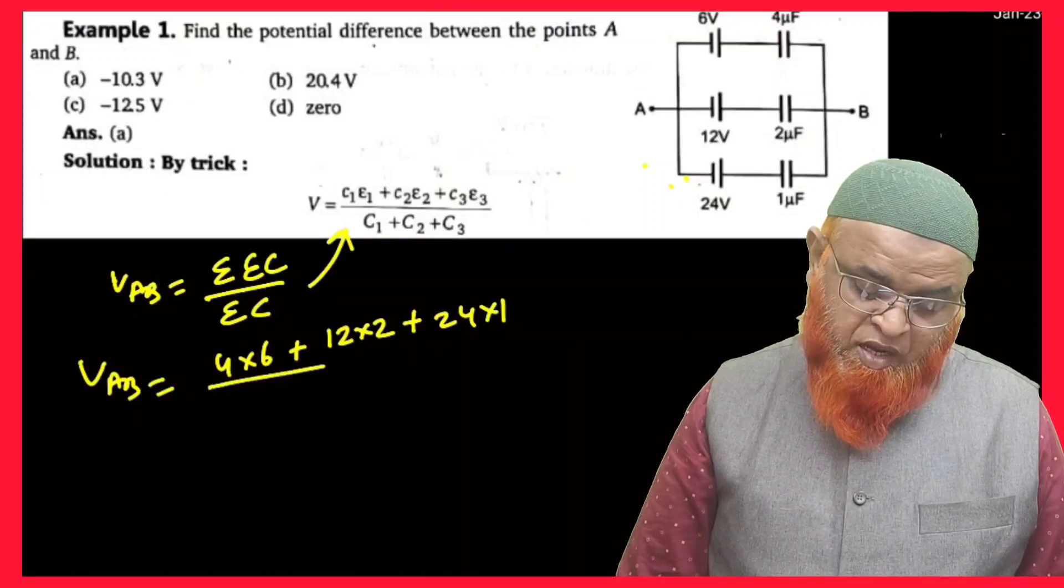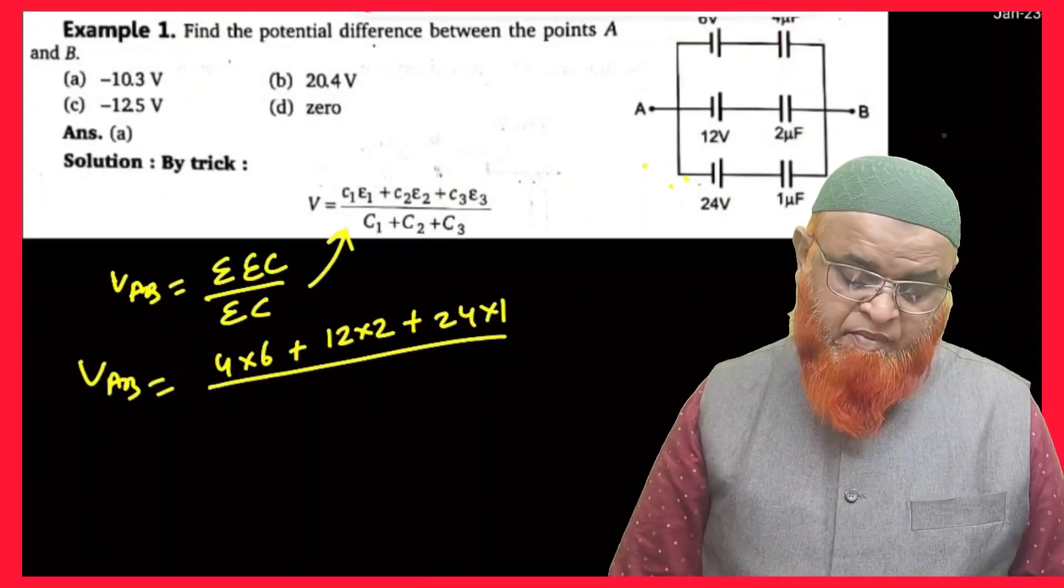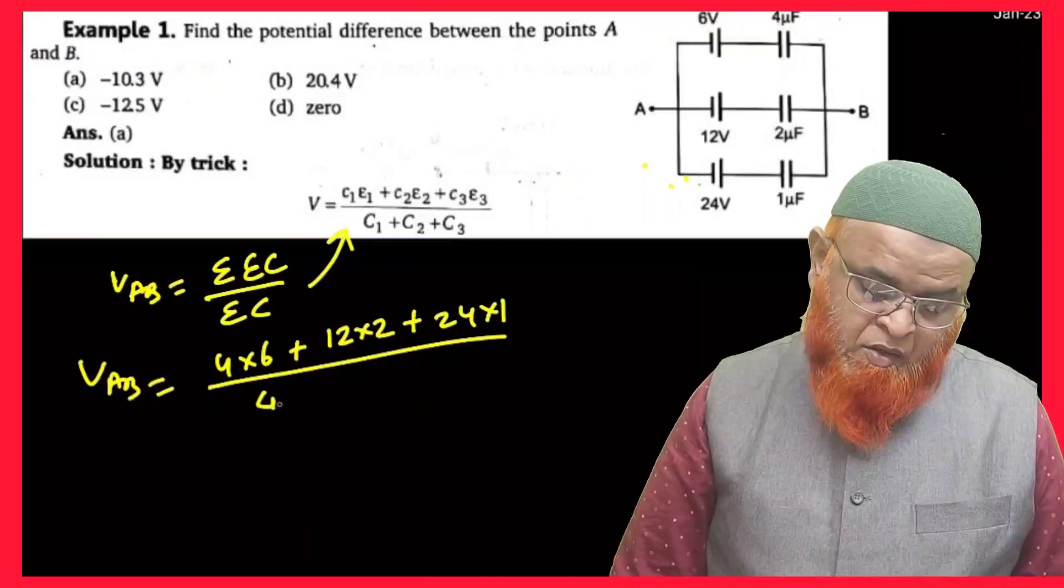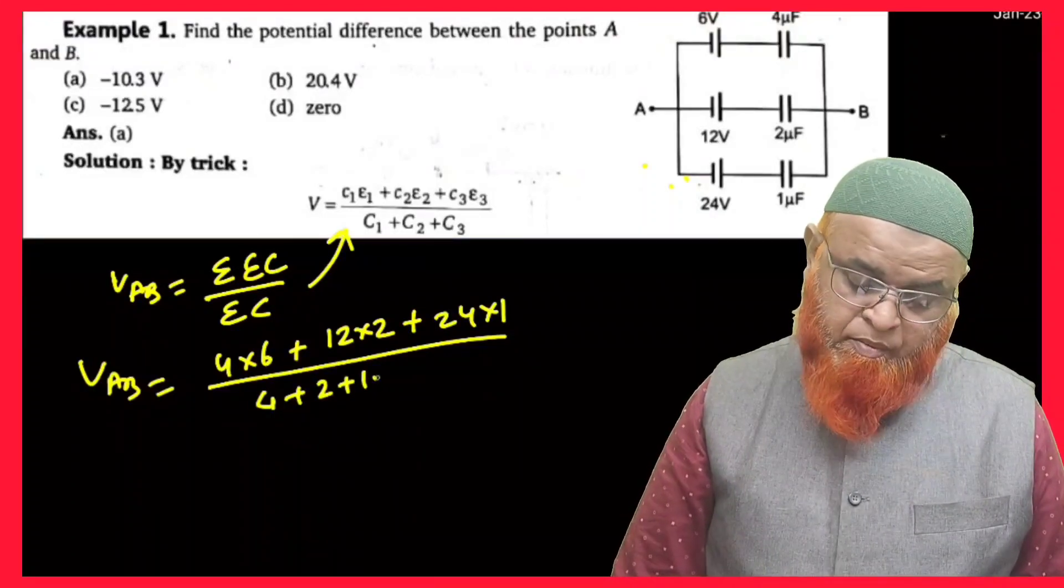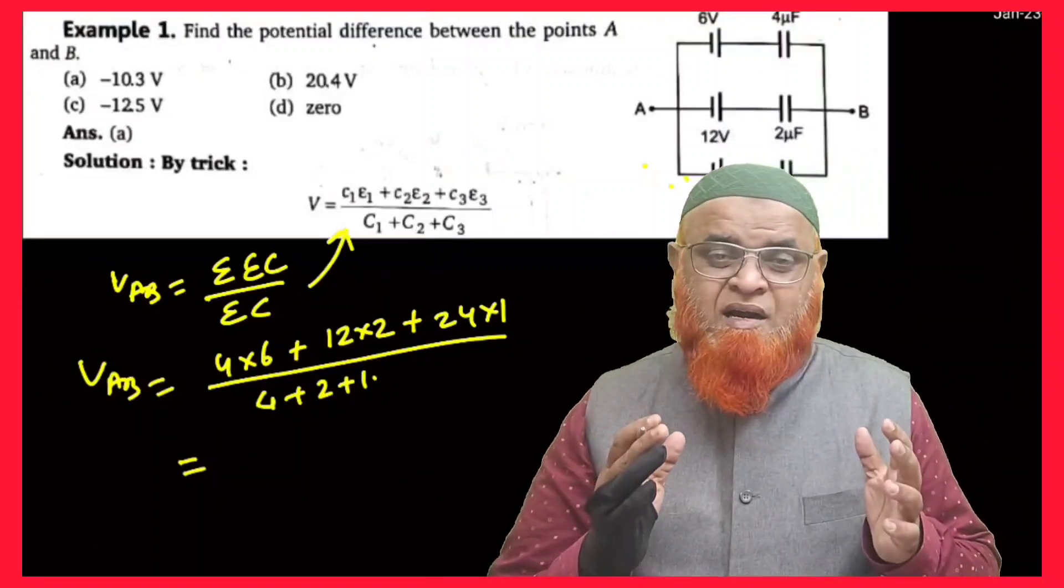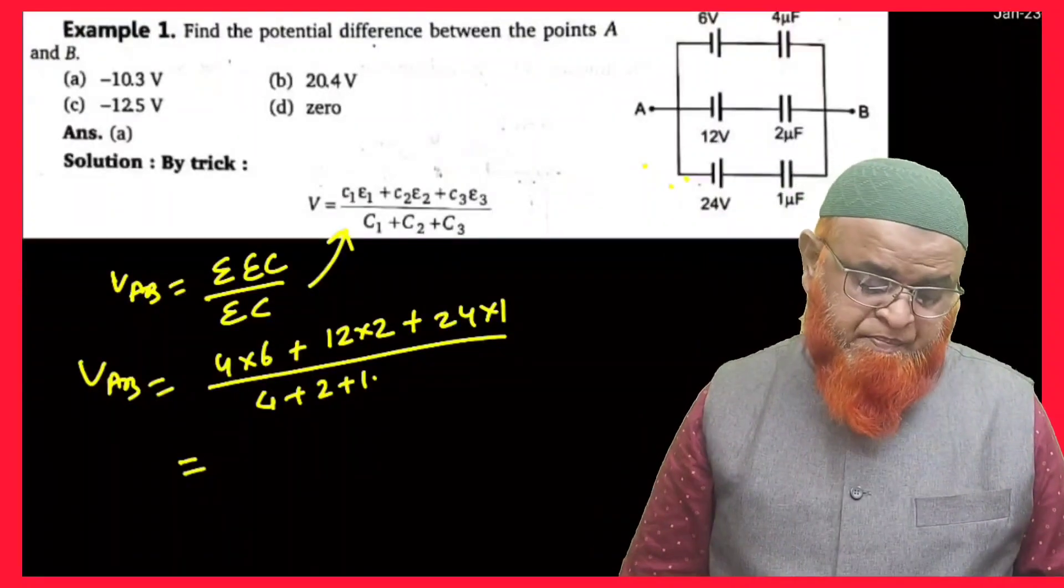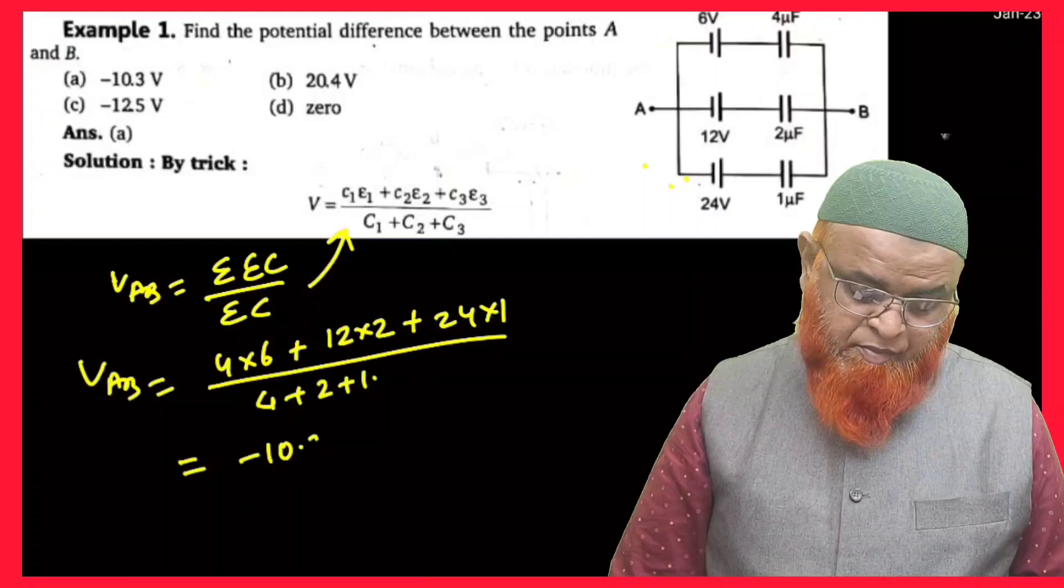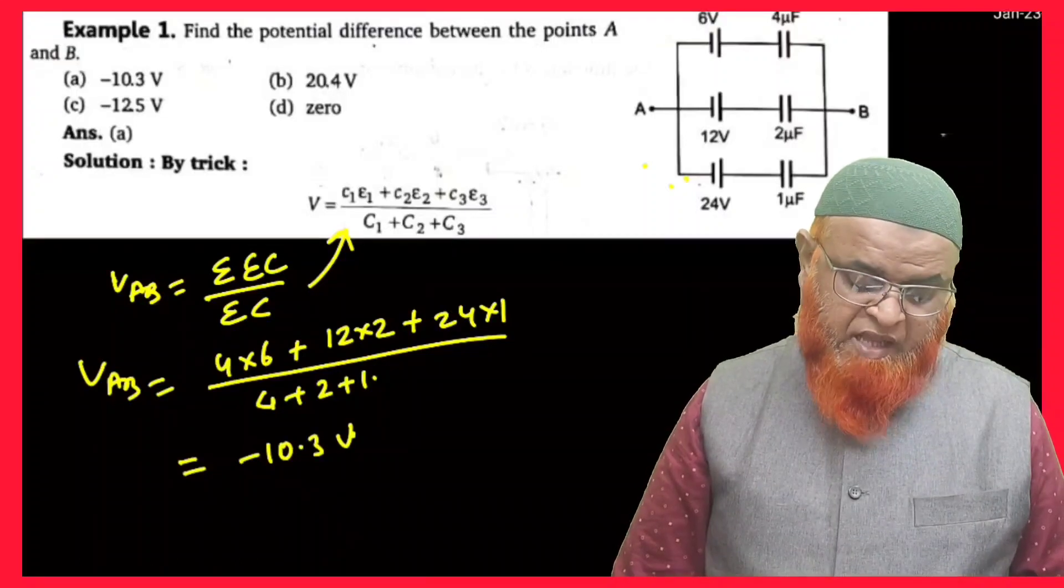24 into 1, divided by C1 plus C2 plus C3, which is nothing but 4 plus 2 plus 1. So if you go on substituting and solving this problem, you'll be getting minus 10.3V.